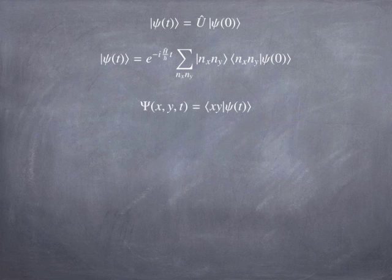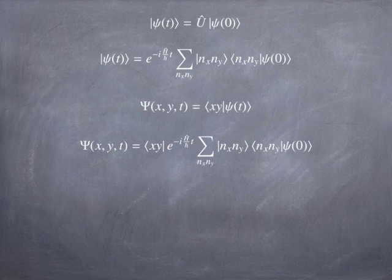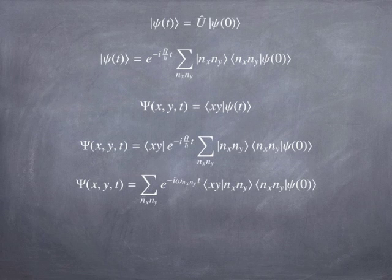So to get that, we take the inner product of psi at some time with the x and y, or the r vector bra that tells us what the wave amplitude is at a different place in space. And if I stick all that in there, I get the following thing. Notice that the Hamiltonian acting on the nx and y basis is just the energy of the nx and y state divided by h bar. That's just omega nx and y. So I can write that. That's just a number. So I can bring that outside, and you'll notice that I have several things here.